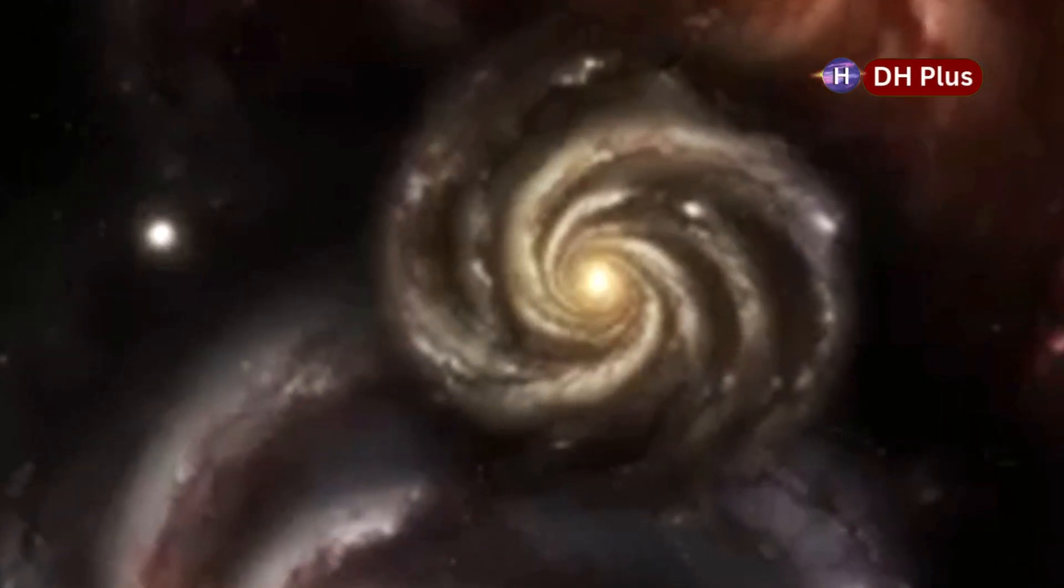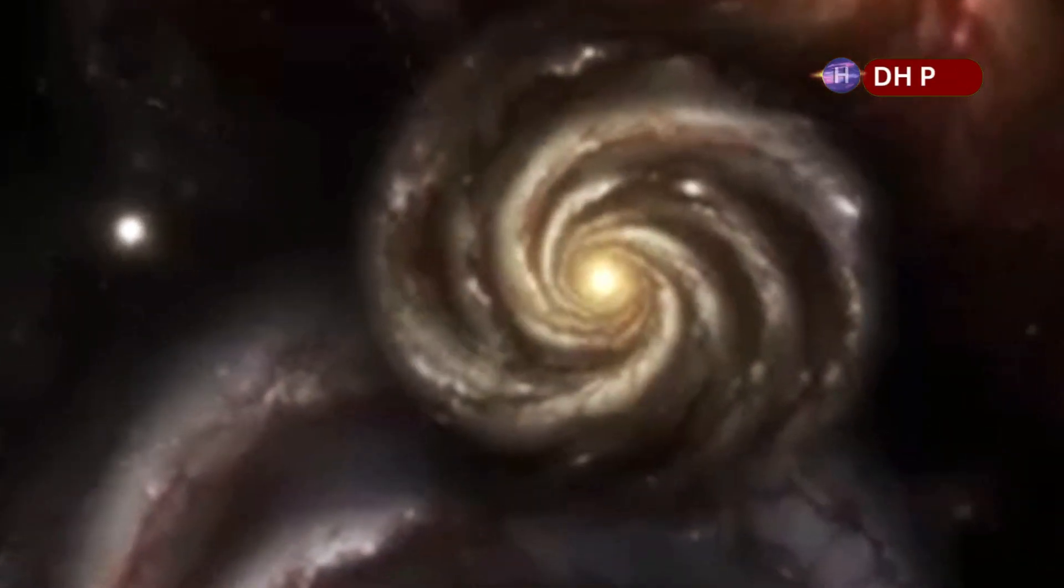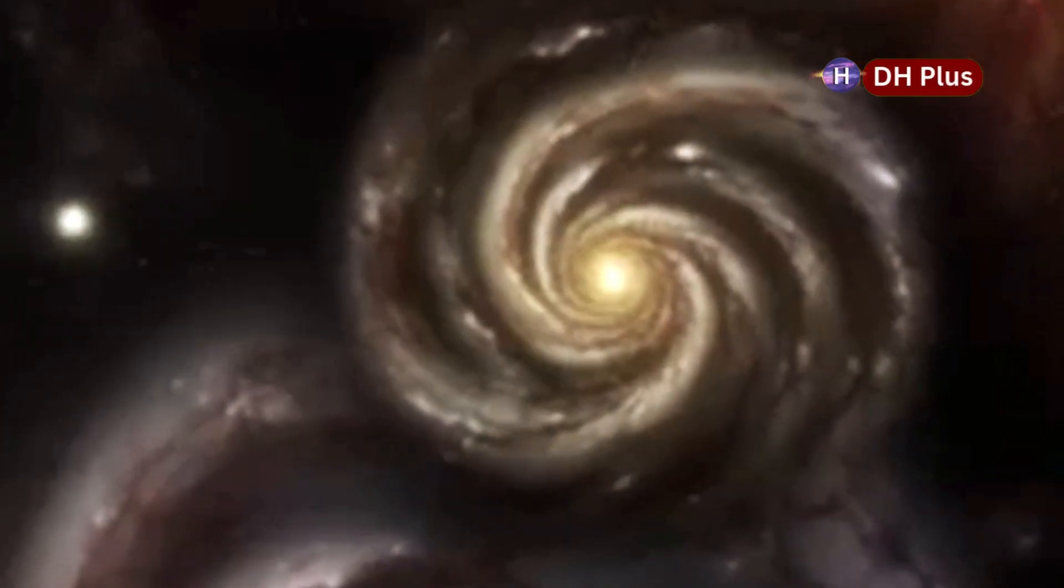But according to the stellar evolutionary theory, that might be problematic because there could also be a theoretical limit to how big stars can apparently grow. According to the theory, the limit a star can grow is around 1,500 times the radius of the sun.